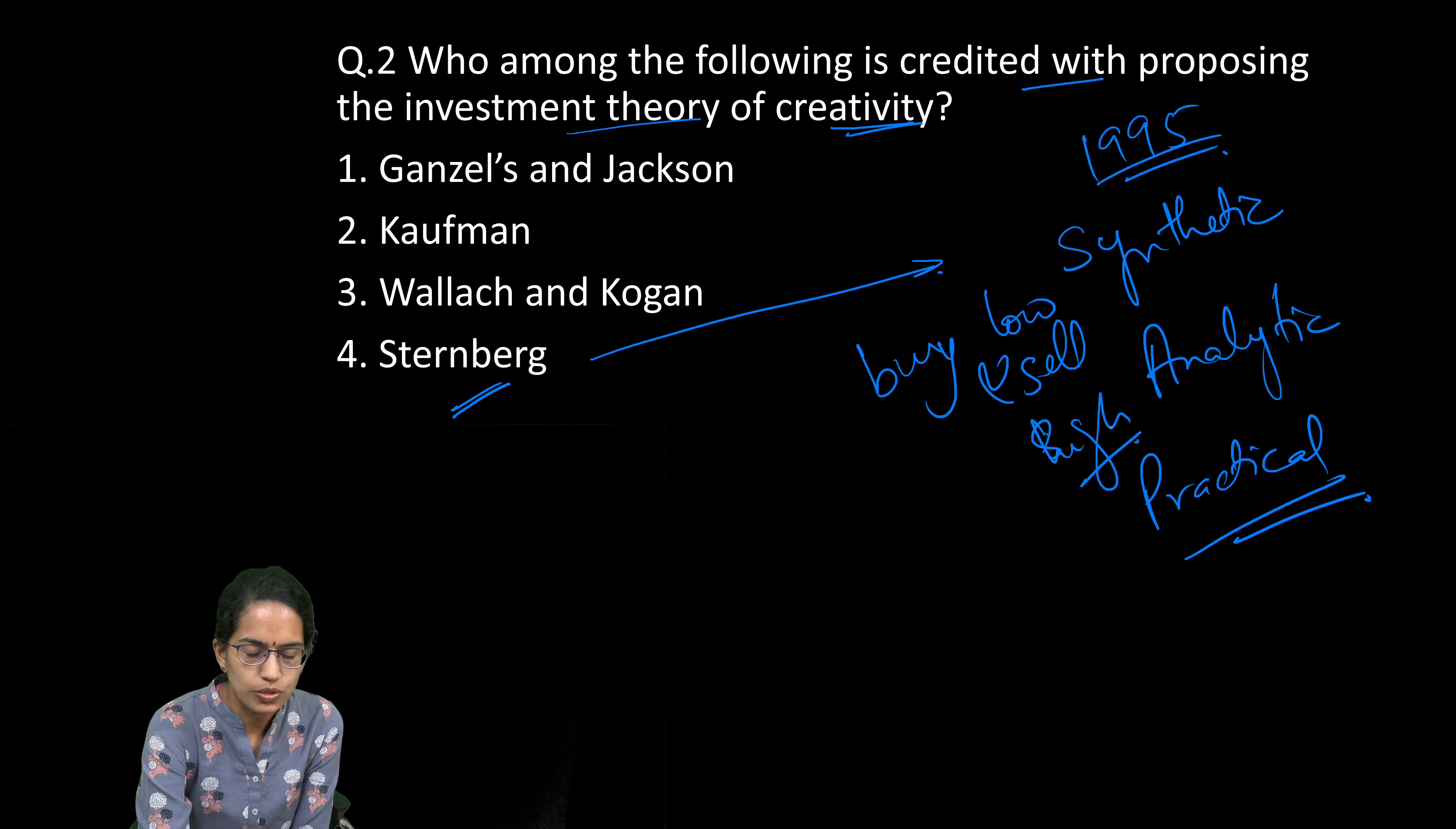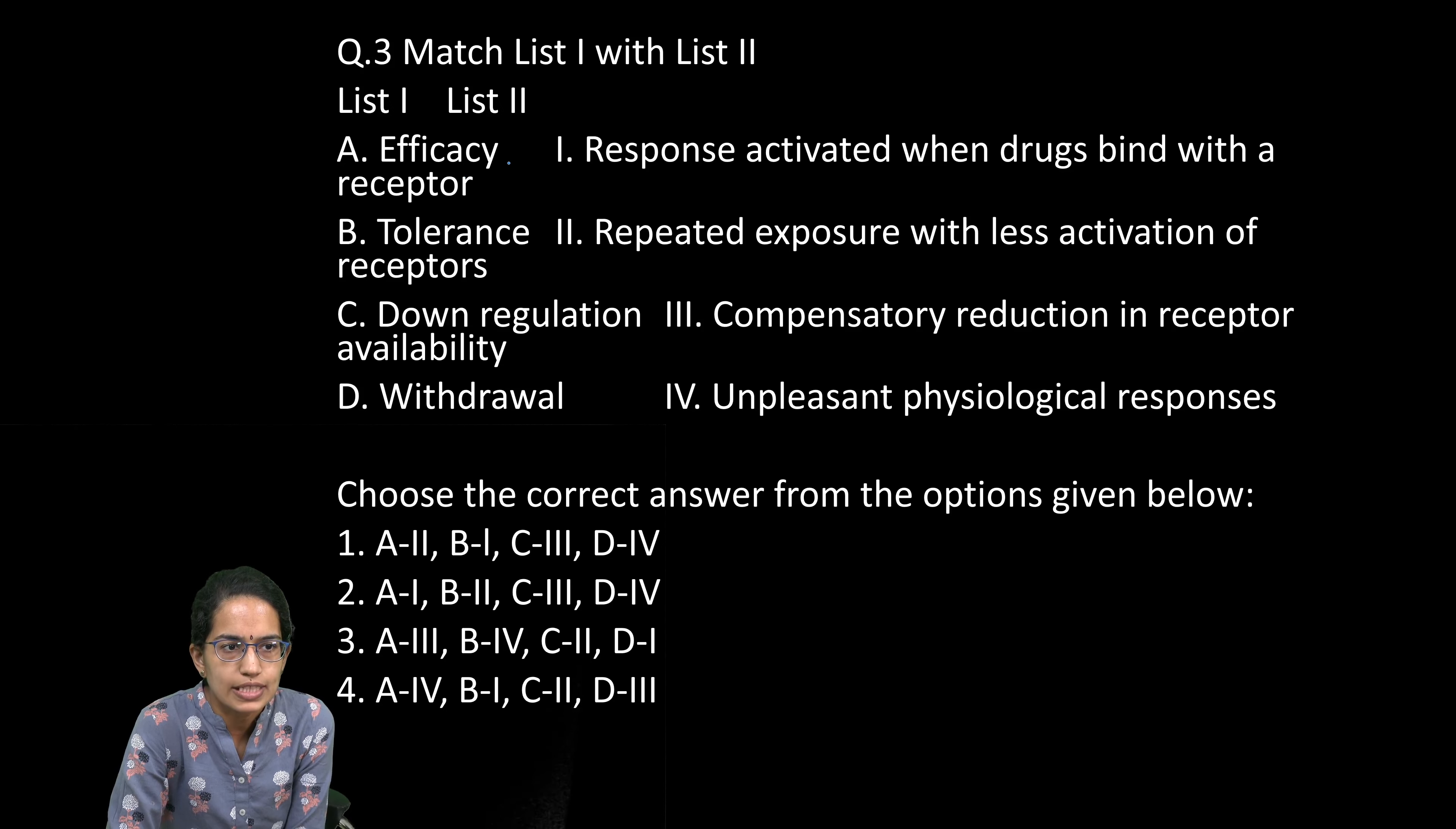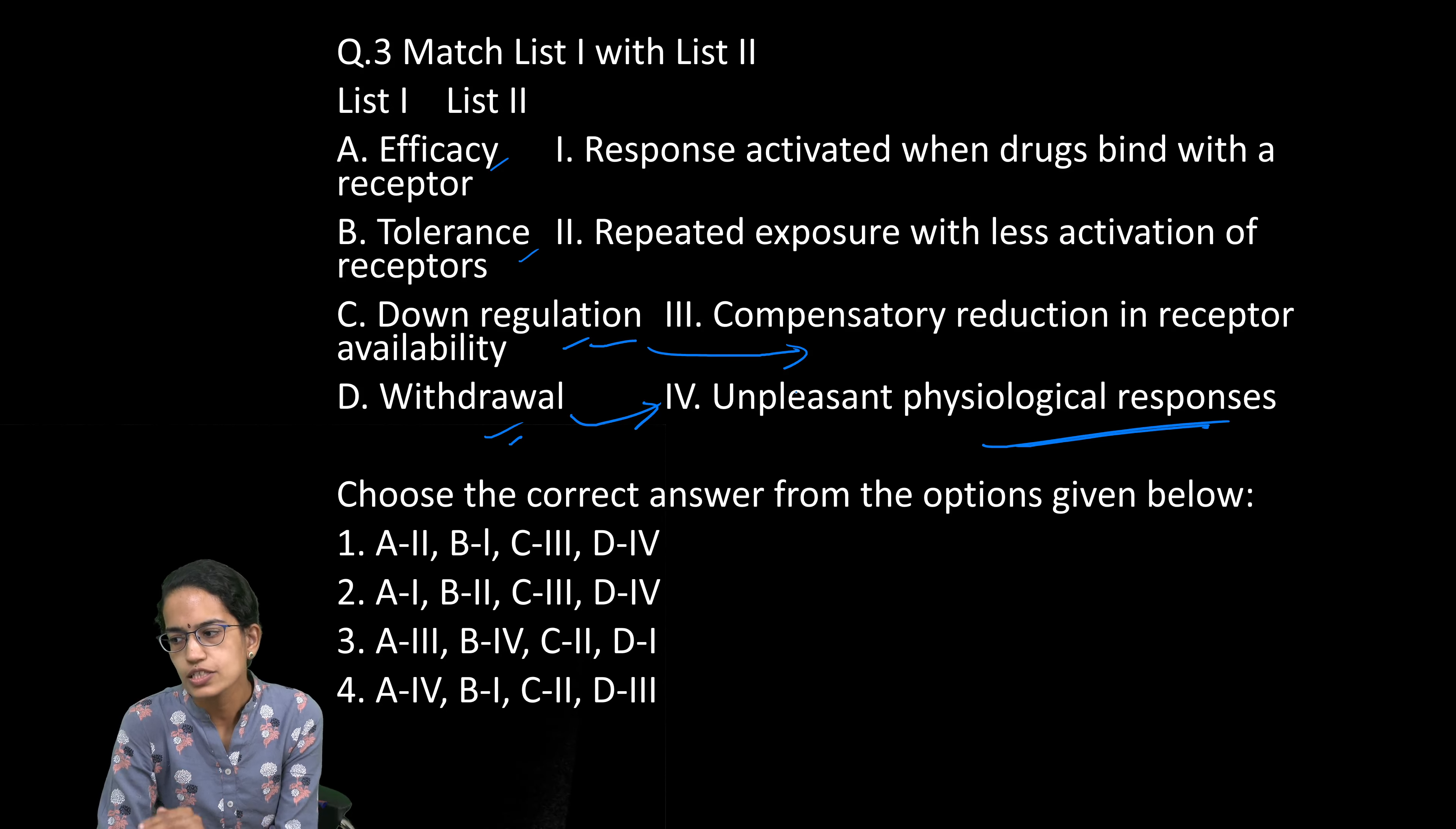The next question talks about matching the list with various parameters: efficacy, tolerance, down regulation, and withdrawal. Withdrawal is simply moving away from drugs, generating an unpleasant physiological response. Down regulation is a compensatory reduction in receptor availability, when the number of receptors in neurotransmitters are reduced in response to increased neurotransmitter release. Efficacy—we're normally talking about vaccine efficacy these days—